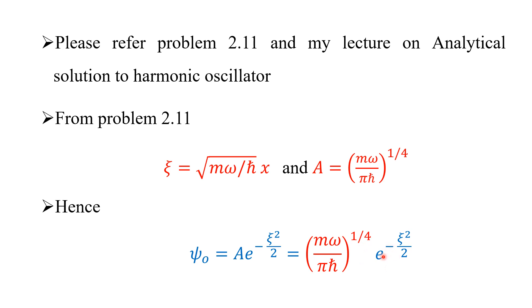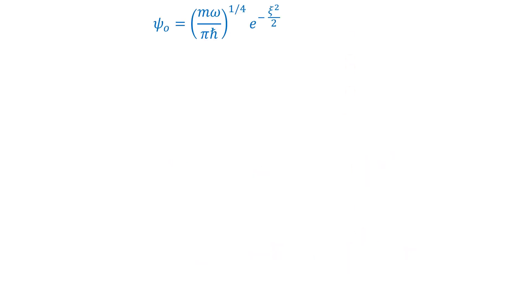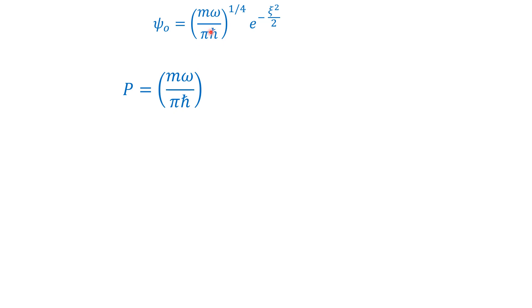We have the exponential term e^(−z²/2). So the wave function is ψ₀ = (mω/πℏ)^(1/4) · e^(−z²/2). Now we have to find the probability, which is the integral of |ψ₀|² with respect to x. When we square the normalization constant, the power 1/4 becomes 1/2.